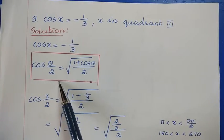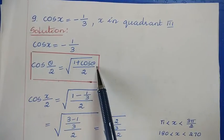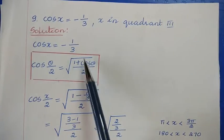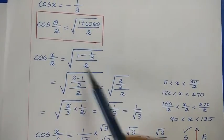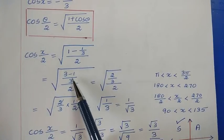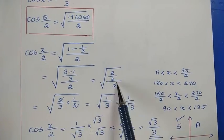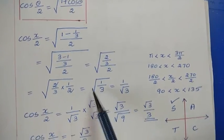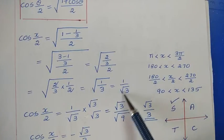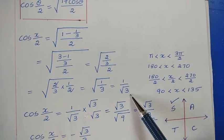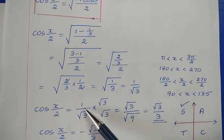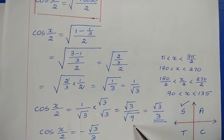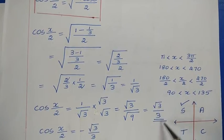Using cos(θ/2) = √((1 + cos θ)/2) with cos x = −1/3: cos(x/2) = √((1 + (−1/3))/2) = √((1 − 1/3)/2). Taking common denominator 3: √((2/3)/2). After cross multiplication, √(1/3) = 1/√3. Rationalize: multiply by √3/√3 to get √3/3.